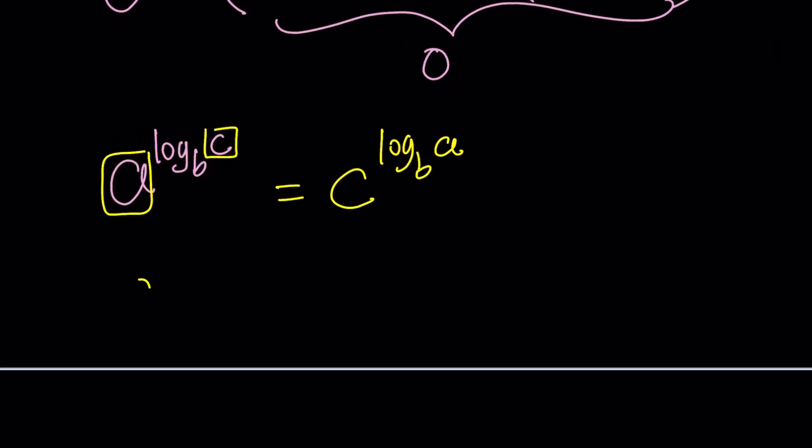Notice that a and c switch roles, but it doesn't matter. Why? Because if you call this x and log both sides base b, and call this y and again log both sides base b, you're going to get the same thing, which means they were equal in the first place. Make sense?